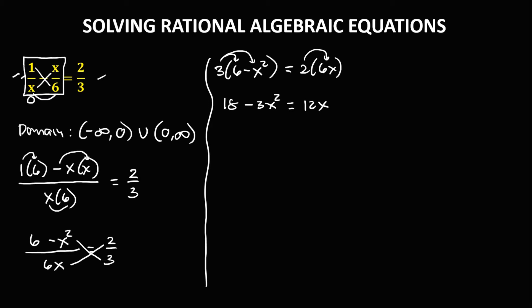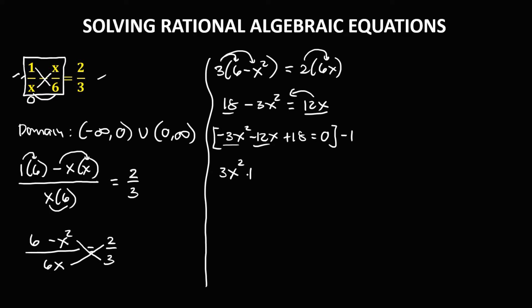We need to equate this equation to 0 and arrange starting with the highest exponent. So we have negative 3x squared minus 12x plus 18 equals 0. Since the first term is negative, we multiply the whole equation by negative 1, giving us positive 3x squared plus 12x minus 18 equals 0.